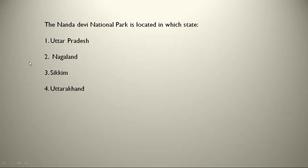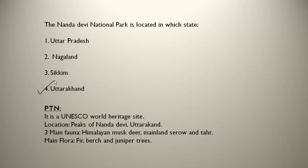The Nanda Devi National Park is located in which state? It is in Uttarakhand, and it is also a UNESCO World Heritage Site. It is located on the peaks of Nanda Devi, around 3,500 feet above ground level. The three main fauna are Himalayan musk deer, mainland serow, and tahar. The main flora are fir, birch, and juniper trees.